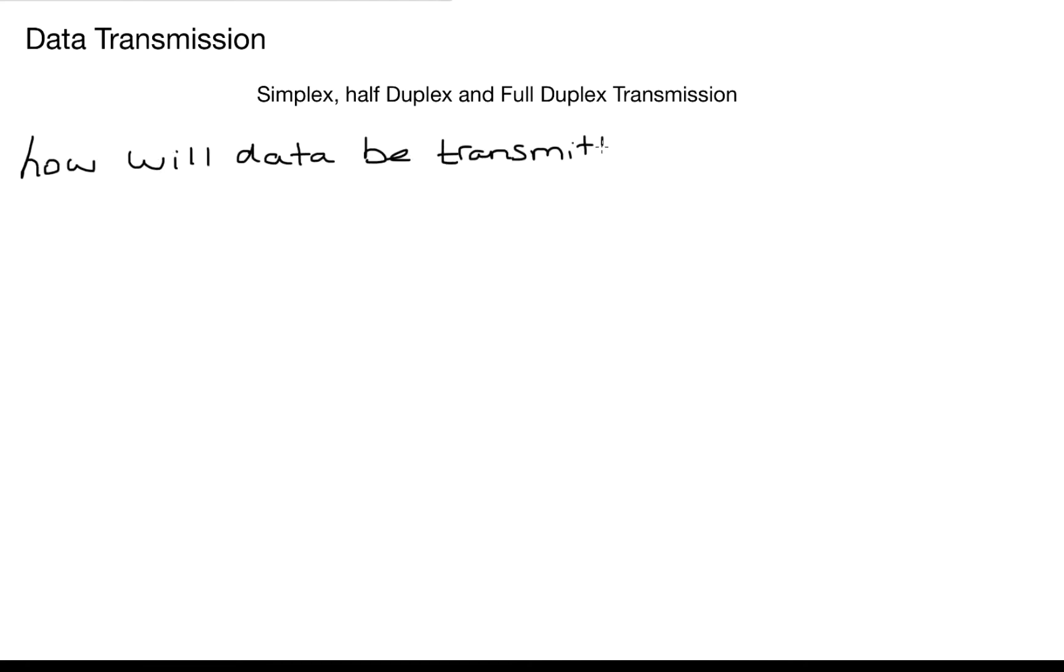So the first question that we're going to look at is how will data be transmitted? In a full duplex transmission, data travels in both directions at the same time on the transmission medium and the transmission medium can be an ethernet cable, an optical fiber cable, or any transmission medium that you may have.